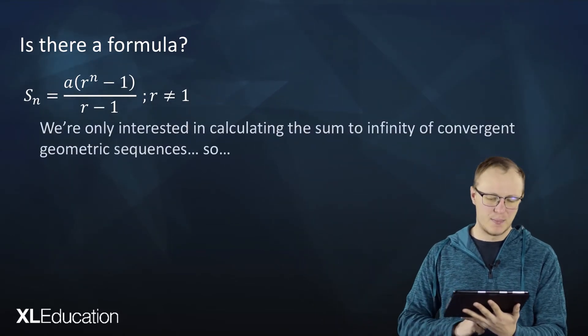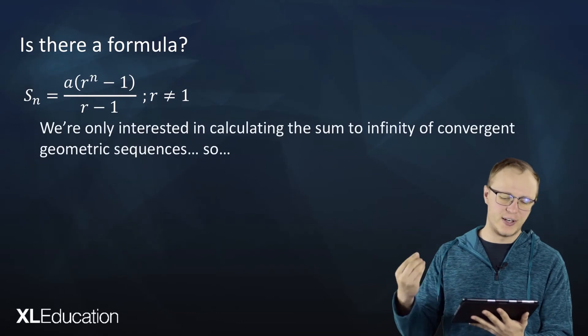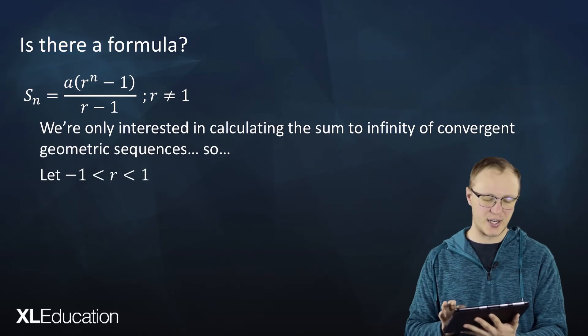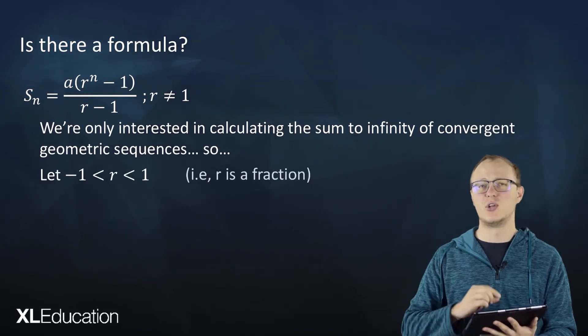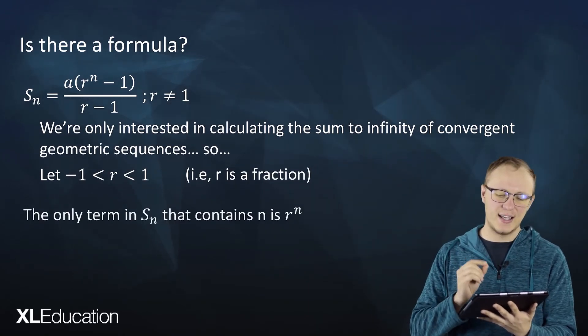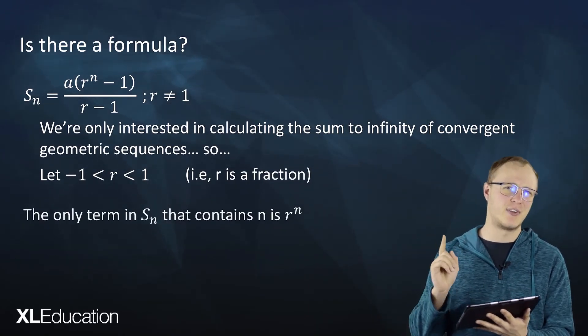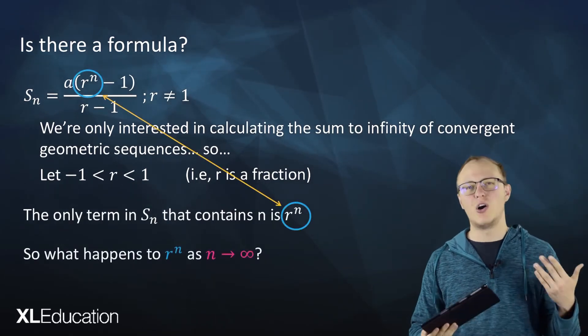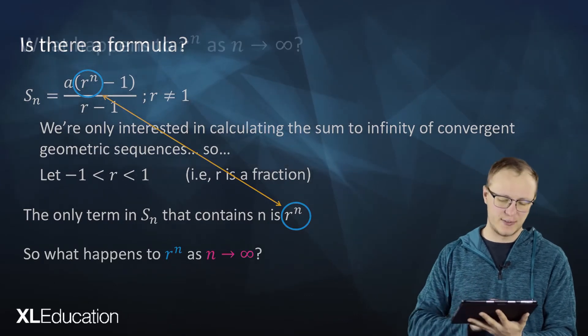So is there a formula for this? We know that Sn equals a(r^n - 1) divided by r minus 1. But now we're trying to find the sum to infinity for a geometric sequence, so we want r to only be between negative 1 and 1. In other words, it's got to be a fraction. The only term in Sn that contains n is r to the power of n. So that's the thing we're going to be looking at here. What happens to r^n as n tends towards infinity?